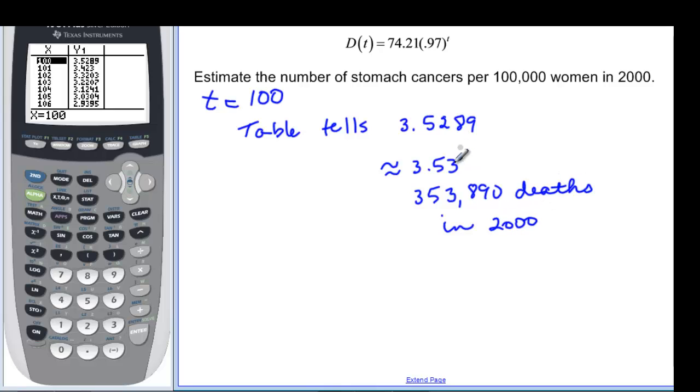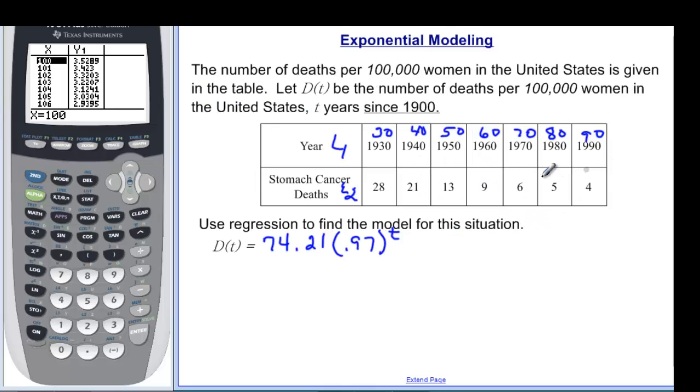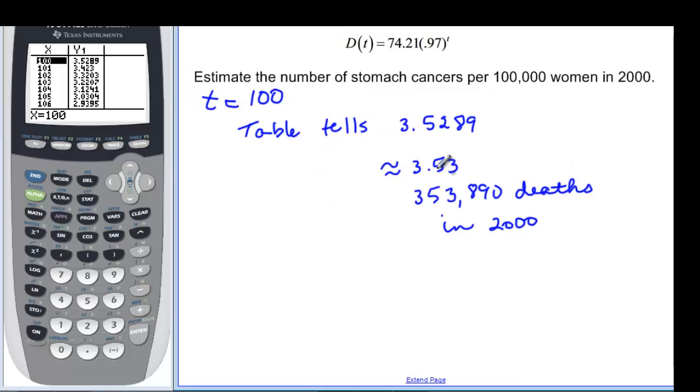Now remember, the data that we had was, back here, was 4, but that really meant 4 per 100,000. So when I write it like this, it's 3.53, but I'd have to say per 100,000.